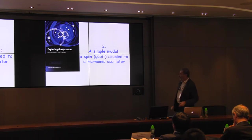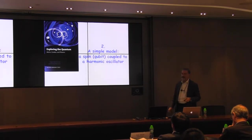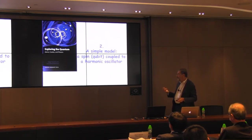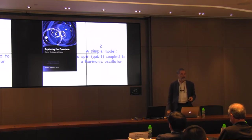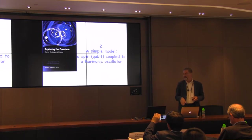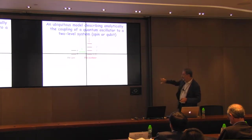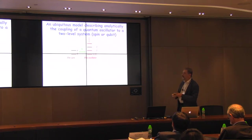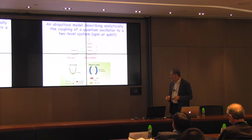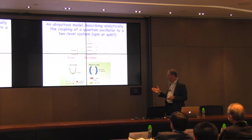Now the second part: a very simple model. Many of these experiments can be discussed by assuming you have a two-level system — which you can call a spin — coupled to a harmonic oscillator. Jean-Michel Raimond and I wrote a book discussing this physics using this model, taking examples from cavity QED and ion trap physics. You see the two systems: the spin, a two-level system; the oscillator, either a photon or phonon system with 0, 1, 2, 3 states; and the coupling omega describes the rate at which the spin can exchange photons or phonons with the oscillator.